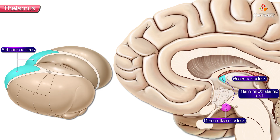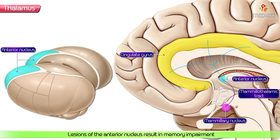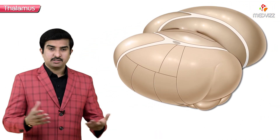The anterior nucleus projects into the cingulate gyrus and it is part of the Papez circuit of emotion, which is part of the limbic system. Lesion of the anterior nucleus of the thalamus results in memory impairment, because the Papez circuit is responsible for intelligence and memory.